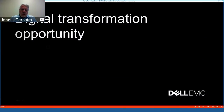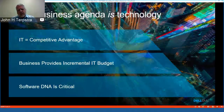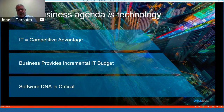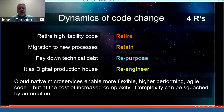There is a significant digital transformation opportunity: 71% of customers agree that if they do not embrace IT transformation, their business will no longer be competitive. The business agenda today is technology, because technology provides competitive advantage. Businesses should provide an incremental IT budget to sustain that competitive advantage. Software DNA is critical to the future of the business, with four dynamics of change: retire, retain, repurpose, and re-engineer.